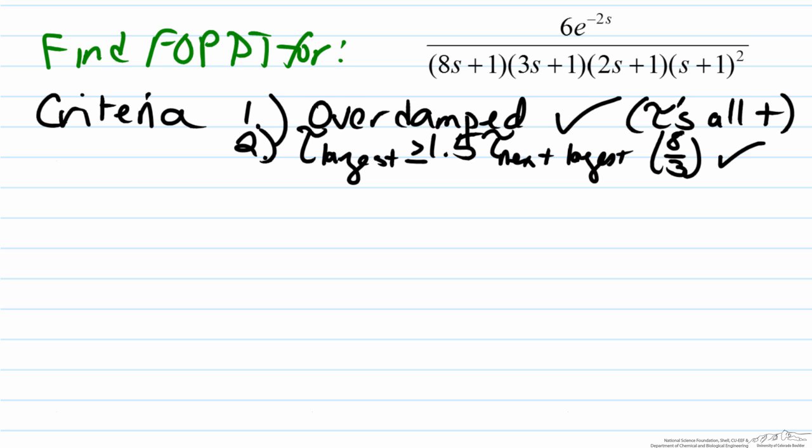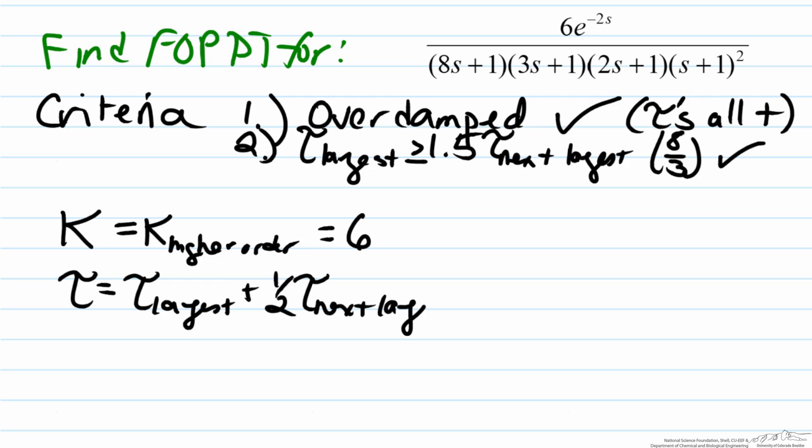So we'll start with evaluating all variables of interest in a FOPDT. We'll start with the gain. The gain is the same gain as our higher order function, so therefore that's just six. For the time constant tau, that is the largest time constant plus the half of the next largest time constant from our higher order transfer function. So here that would be eight plus one half times three, or nine and a half.